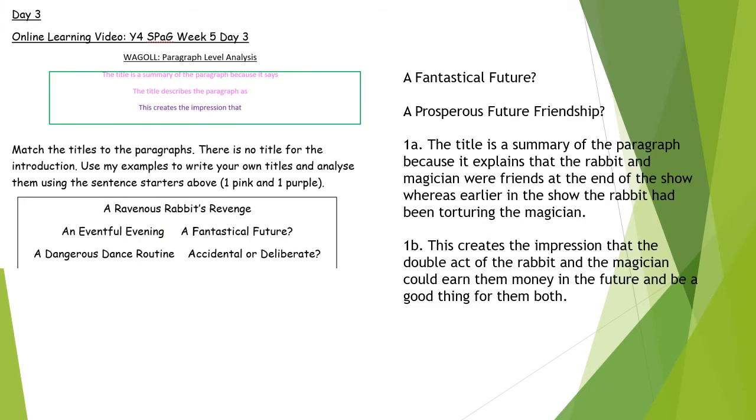So paragraph and sentence. On day three, you've got paragraph level analysis. You can see that I've chosen some of the sentence data for an example. You might have some different ones, but these are just the ones I'm going to use. It asks you to match the titles to the paragraphs. I have got five titles and there are five titles in your waggle, apart from the introduction.